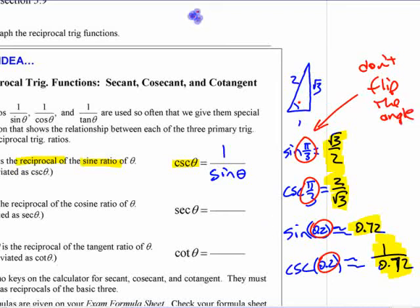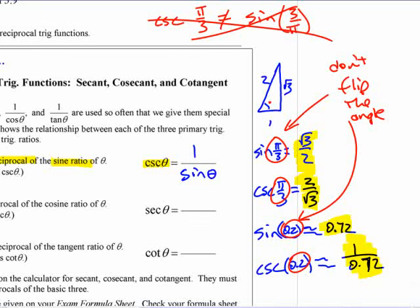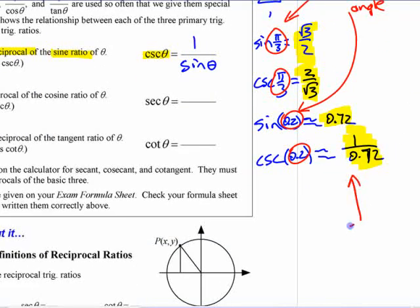Notice that I did not flip the angle over, right? This is the angle. Whether it's as a decimal or an exact pi fraction, don't flip the angle. Common wrong thing is grade 12s will say sine of pi over 3, or sorry, cosecant pi over 3. They'll say cosecant pi over 3 is equal to sine of 3 over pi. This is not true, okay? Don't do that. You don't flip the angle over. You flip the ratio over. That's important. Maybe you should make a note of that. Flip the ratio, not the angle, okay?